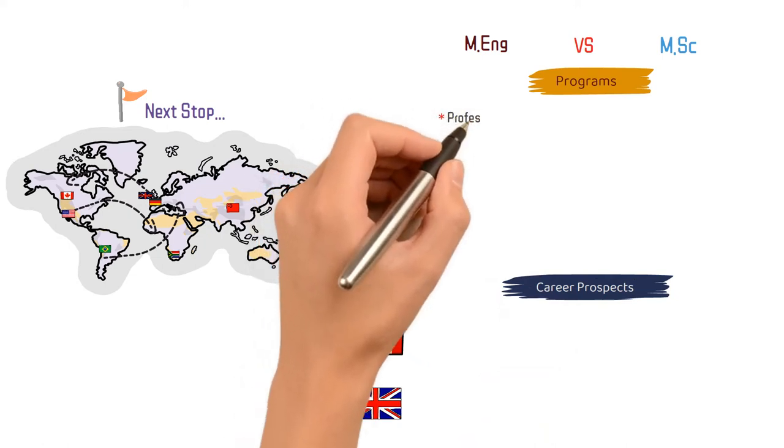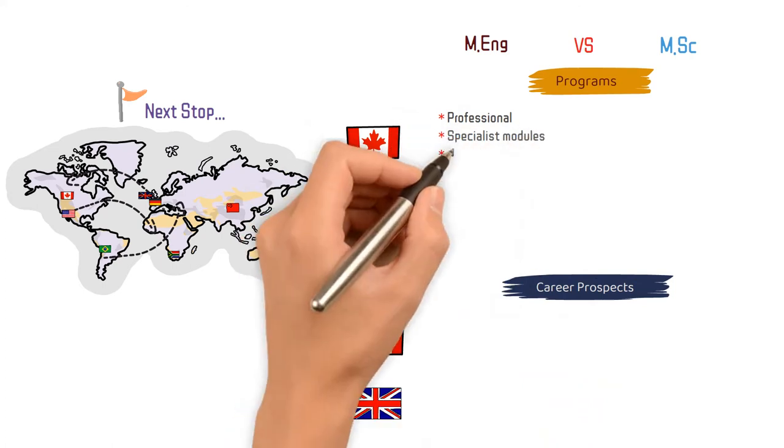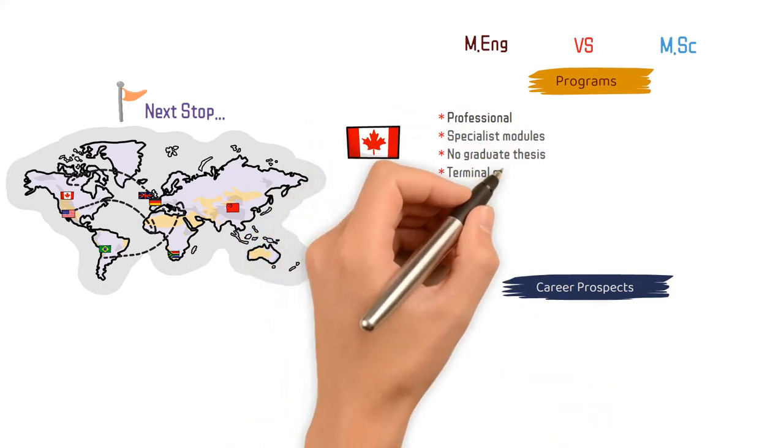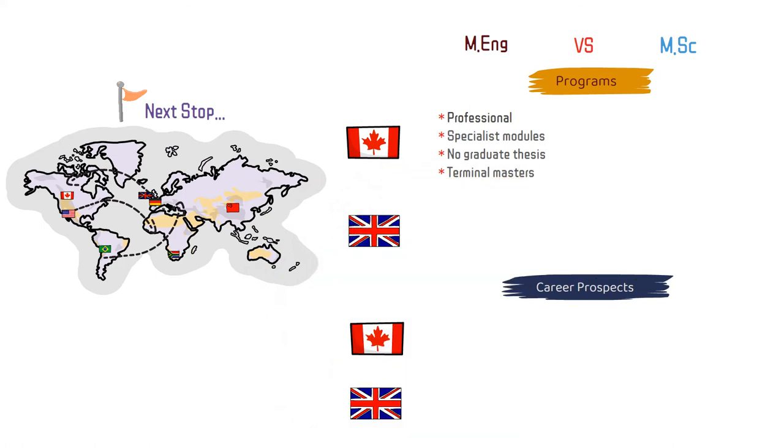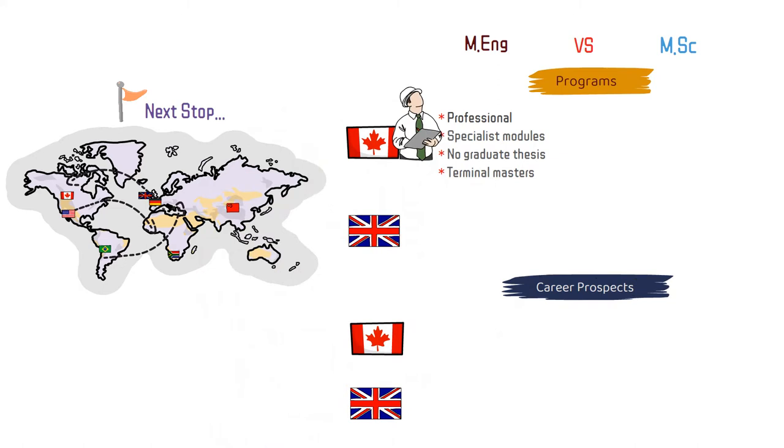In Canada, for example, the Master in Engineering is a professional graduate program that prepares students for working in the industry through specialist modules and academic projects. Note that this Master has no graduate thesis requirement.